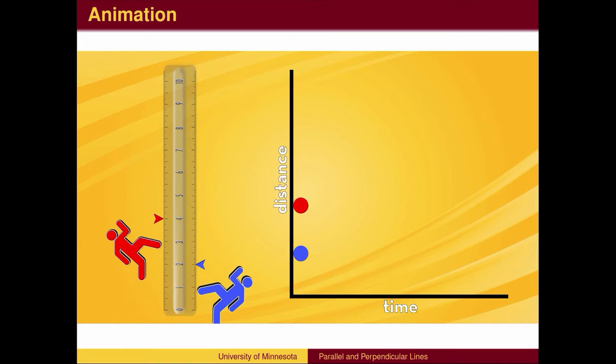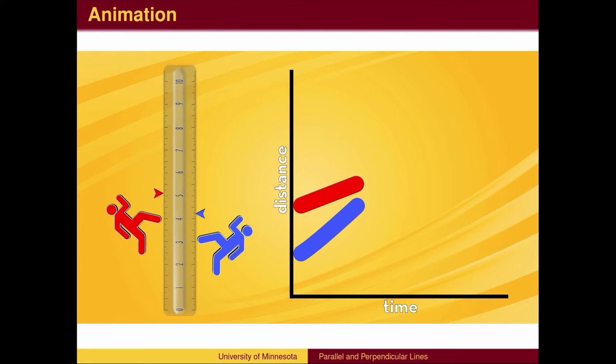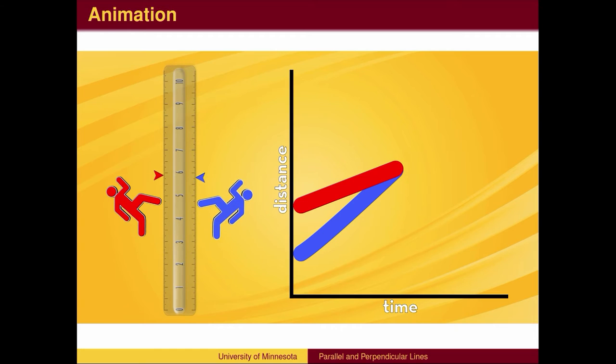Think of this as a race between two competitors up the y-axis, with time measured on the horizontal axis. The red competitor starts with a lead of 2 meters. If the slope, or speed, of the lower line is greater than 1 half,